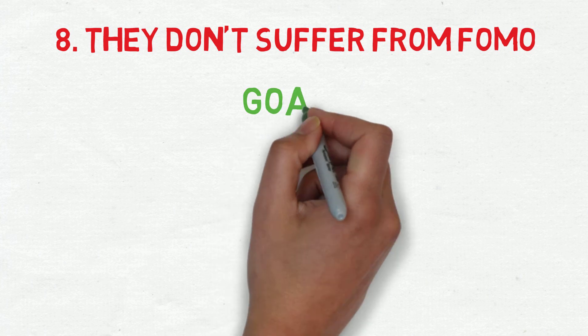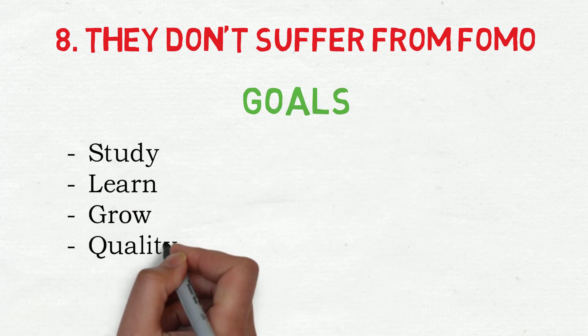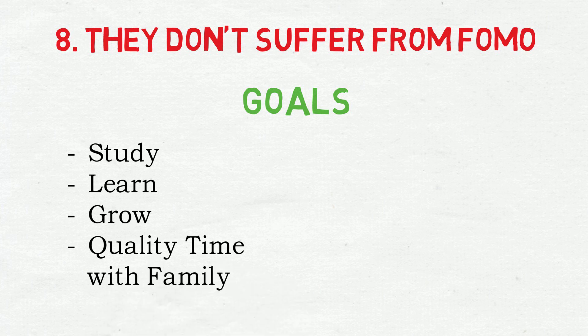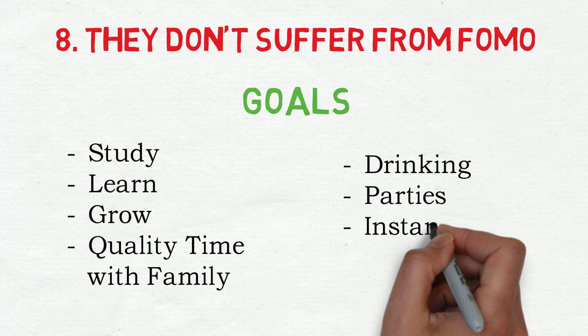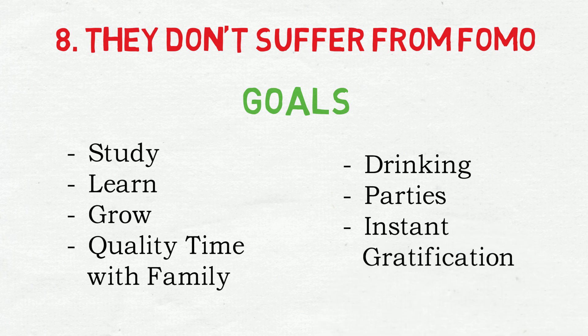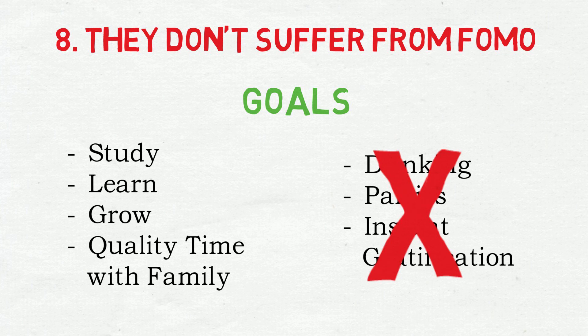Number eight, they don't suffer from FOMO. FOMO, or fear of missing out, is not something that most intelligent people suffer from. Many have well-defined long-term goals that they are shooting for, and instant gratification is not very high on their list. The fear of missing out on a night at the bar or a wild party just doesn't really register.